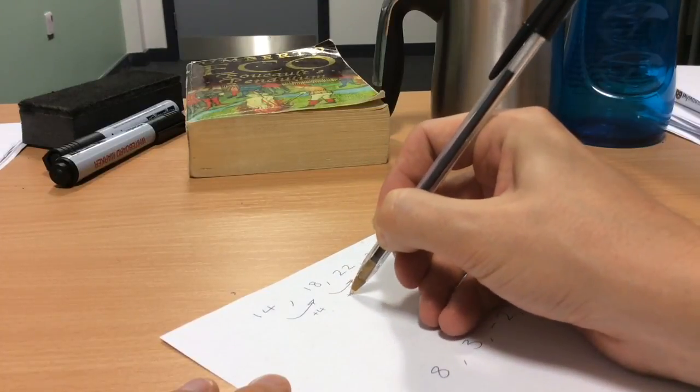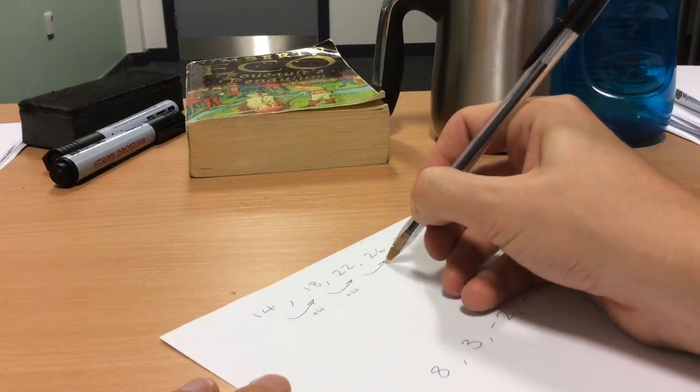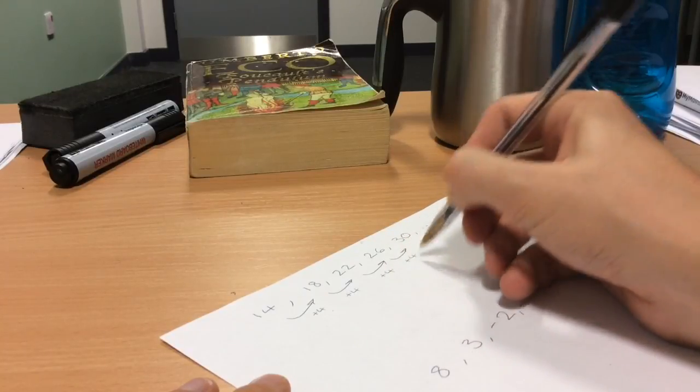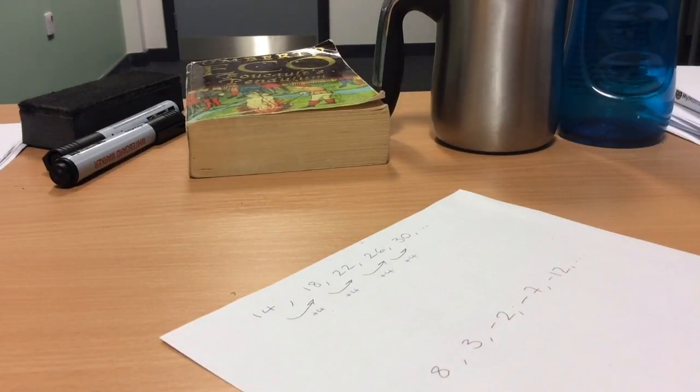18 up to 22 is plus 4, 22 up to 26 is plus 4, and so on. So straight away we know that this is a linear sequence and that it fits into our two boxes pattern. Our two boxes look like this: something times n plus or maybe minus something else.